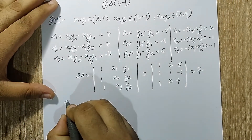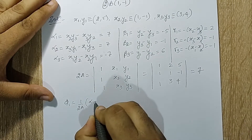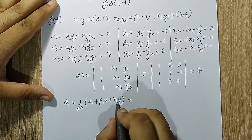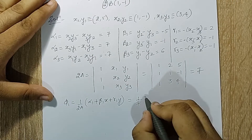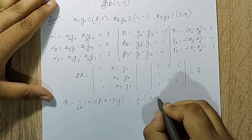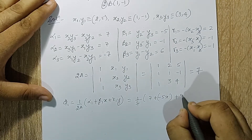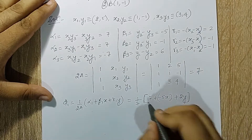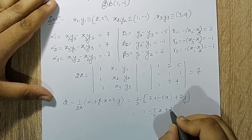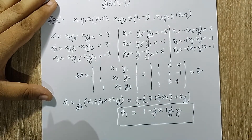Now I'm supposed to calculate the linear interpolation functions phi 1, phi 2, and phi 3. The formula for phi 1 is 1 upon 2A times (alpha 1 plus beta 1·x plus gamma 1·y). Since x and y are not known, I write 1 upon 7, alpha 1 is 7, beta 1 is minus 5, so minus 5 times x, plus 2y. When I solve this I get: 1 minus 5/7·x plus 2/7·y.